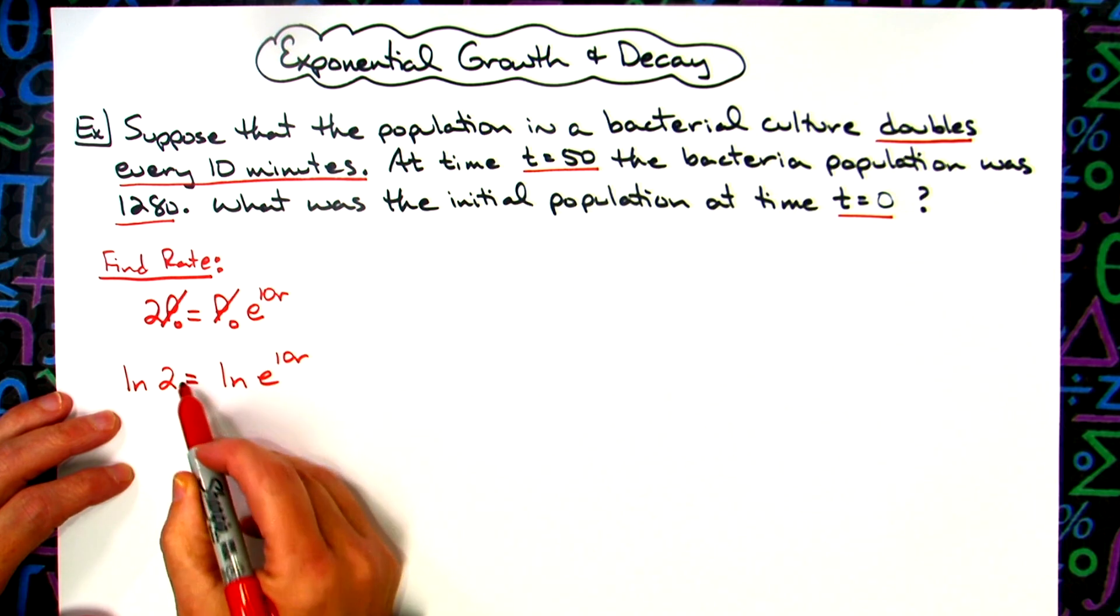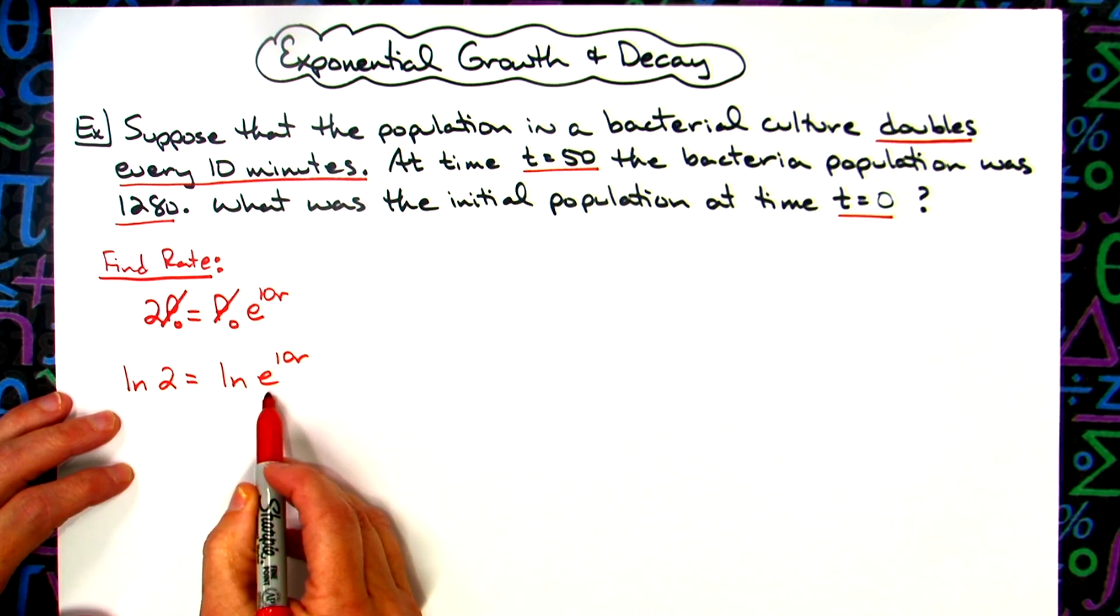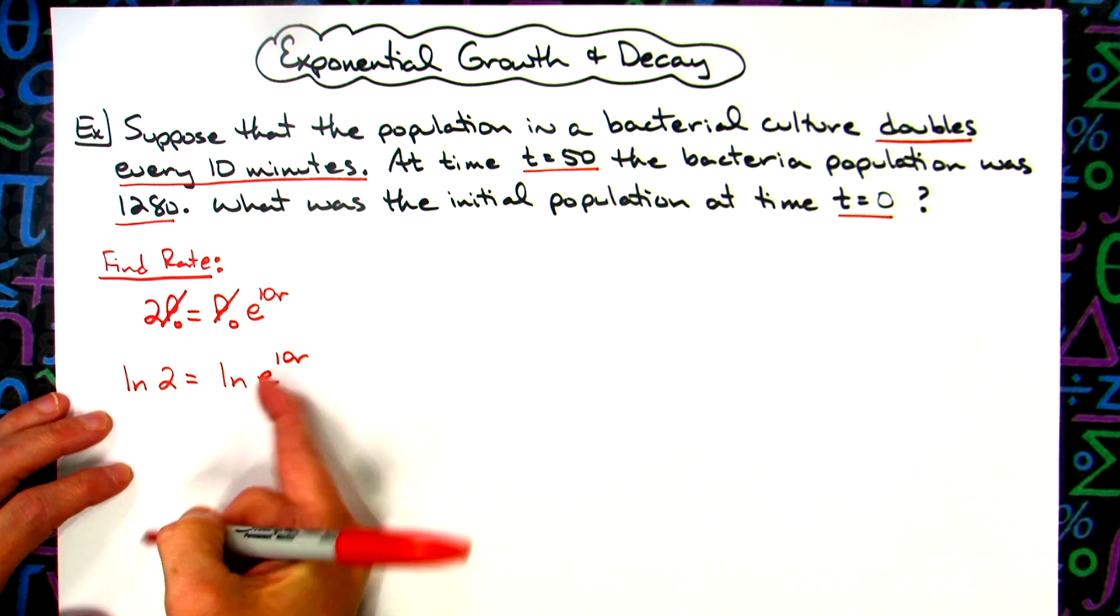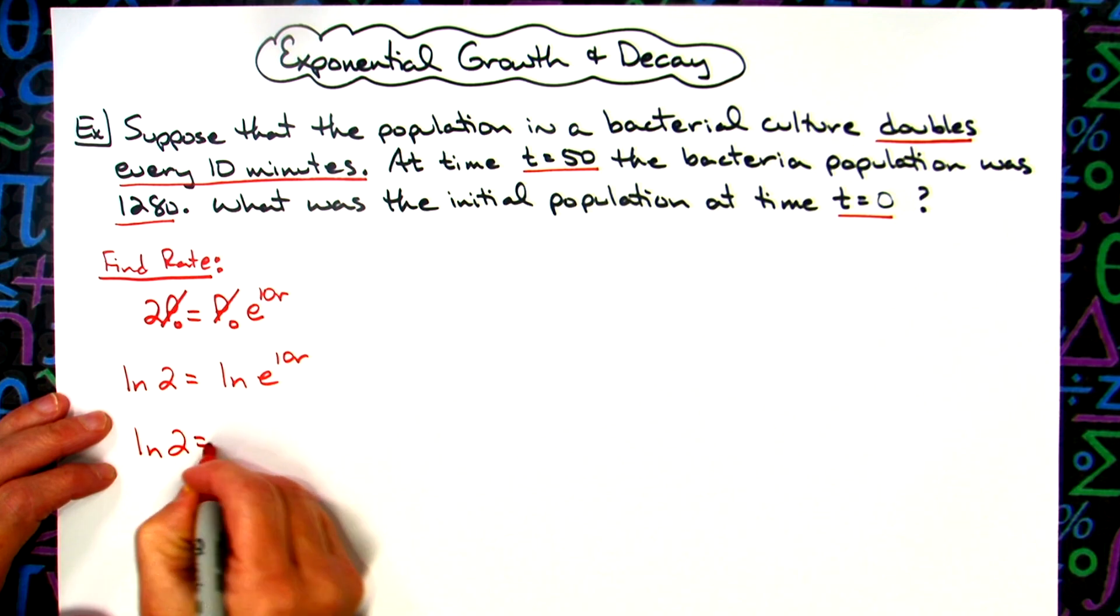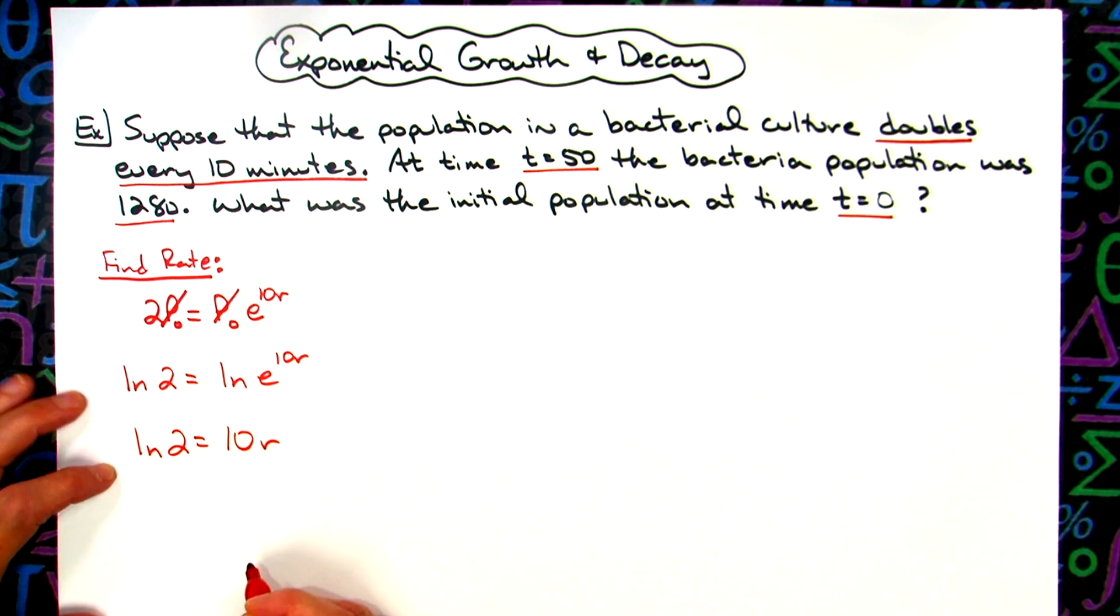10r jumping that frog there for your log rule and natural log of e is 1. So then basically this equals 10r. So I've got natural log of 2 is equal to 10r. I can go ahead and solve for r by dividing by 10. So natural log of 2 divided by 10 is equal to r.